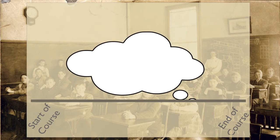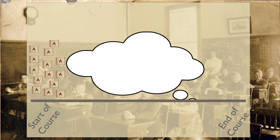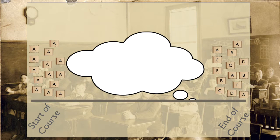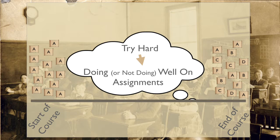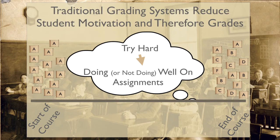If we get inside the student's head, at the start of a course students are all starting with A's, but ending all over the board. At the start, a student's usually thinking: if I try hard, I'm going to do okay in this course. But at some point, students realize it actually doesn't matter how hard they try. It doesn't matter if they listen well, show up, understand the material, or are well-behaved. What really matters is doing or not doing well on assignments. And when students figure that out, it changes their motivation. Traditional grading systems reduce student motivation and therefore reduce their grades.